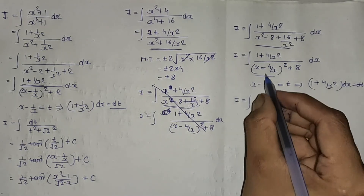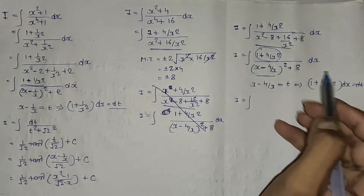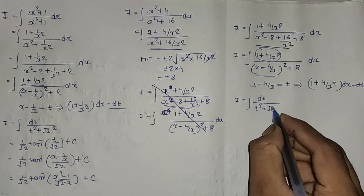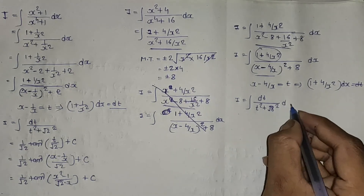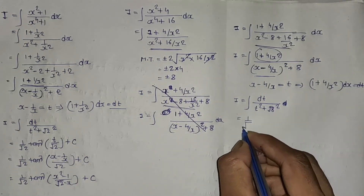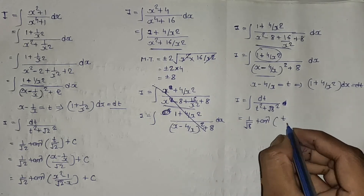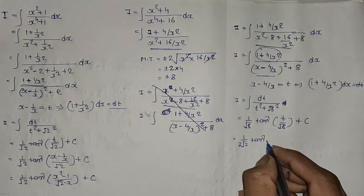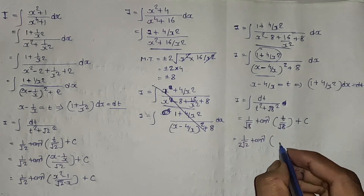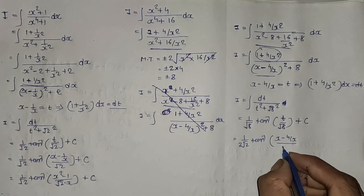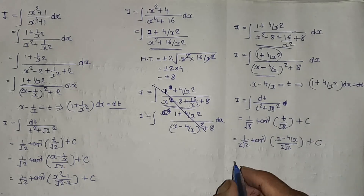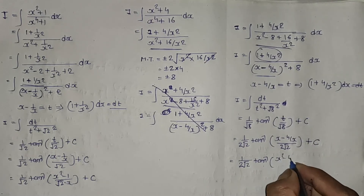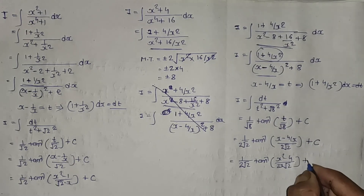Then I equals integration of dt divided by (t² + (√8)²), which is (1/√8) · tan⁻¹(t/√8) + C. Since √8 = 2√2, substituting back t = x - 4/x: answer is (1/(2√2)) · tan⁻¹((x² - 4)/(2√2·x)) + C.